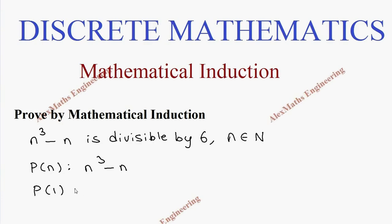We are going to find what is P(1). 1³ - 1 which is 1 - 1 and it is 0. We can say it is divisible by 6 because 0 is divisible by any number.